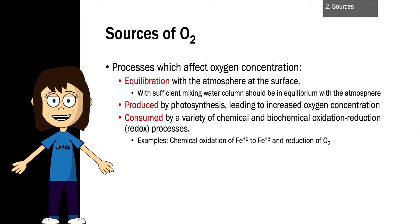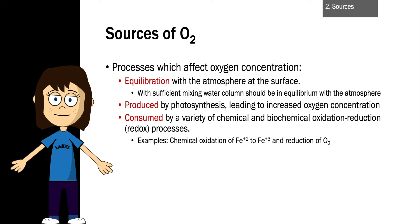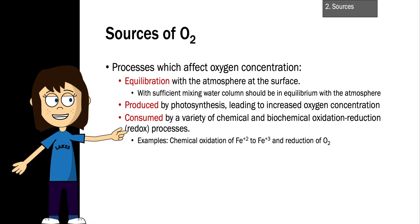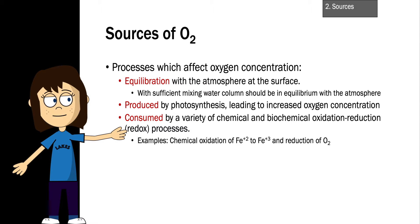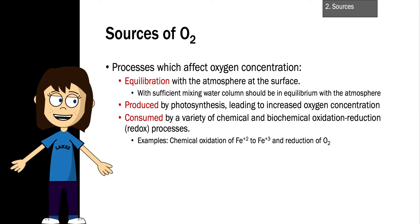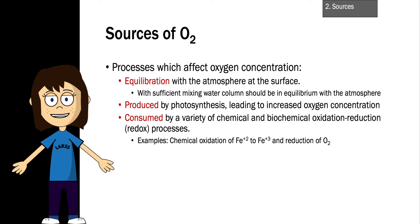If a lake is supersaturated, it's going to lose oxygen to the atmosphere to regain equilibrium. Likewise, if a lake is undersaturated, it's going to gain oxygen from the atmosphere. Oxygen can also be introduced from other hydrological inputs like rivers, groundwater, or melting glacial ice. But here we focus on biological sources: production through photosynthesis, leading to increased oxygen concentration, and consumption through biological respiration and through chemical and biochemical oxidation-reduction processes, better known as redox reactions.